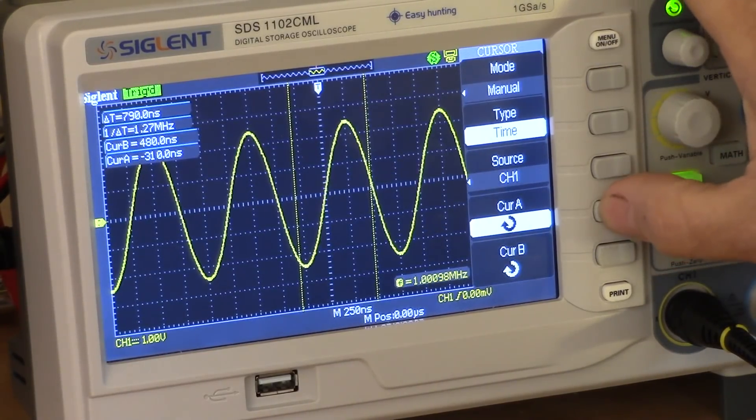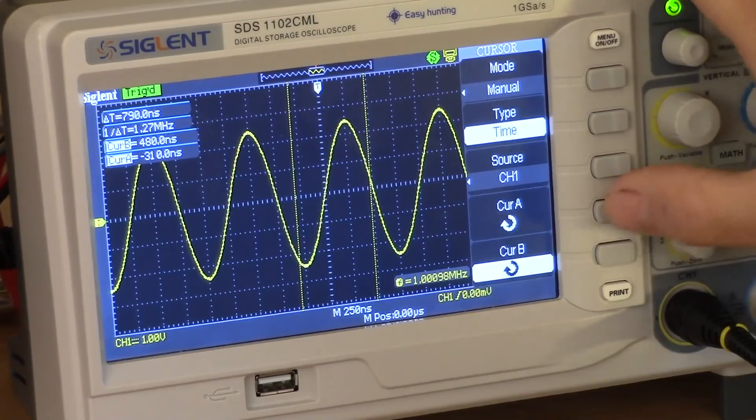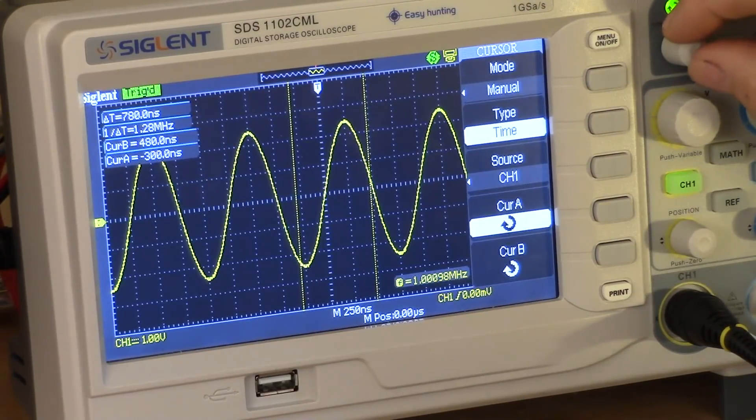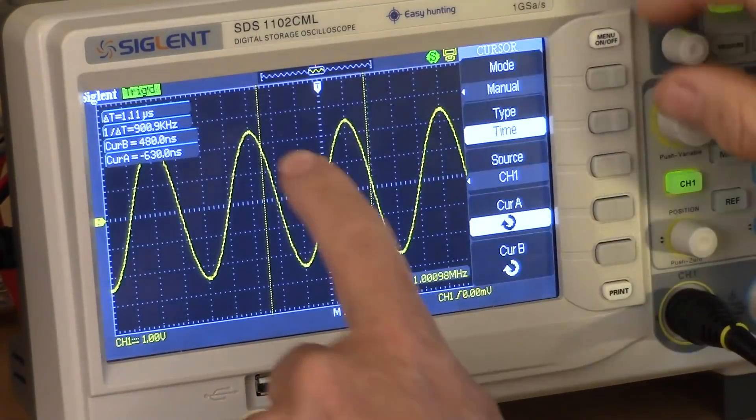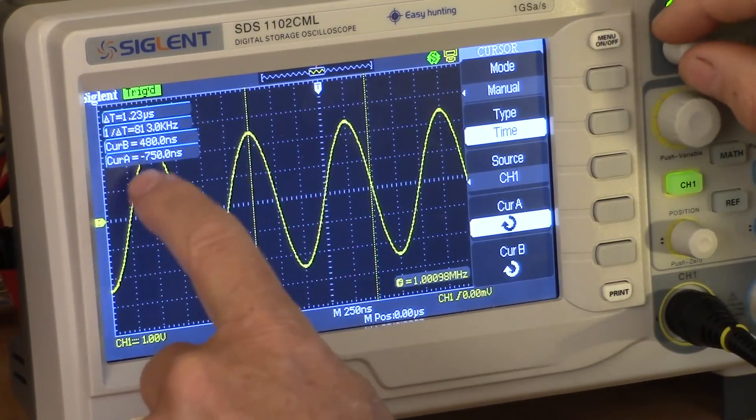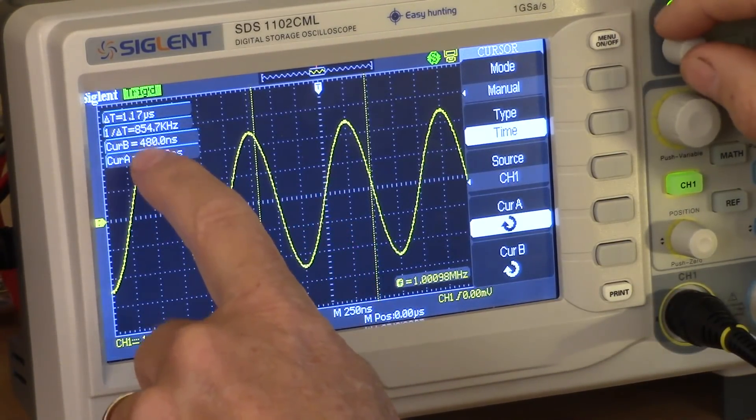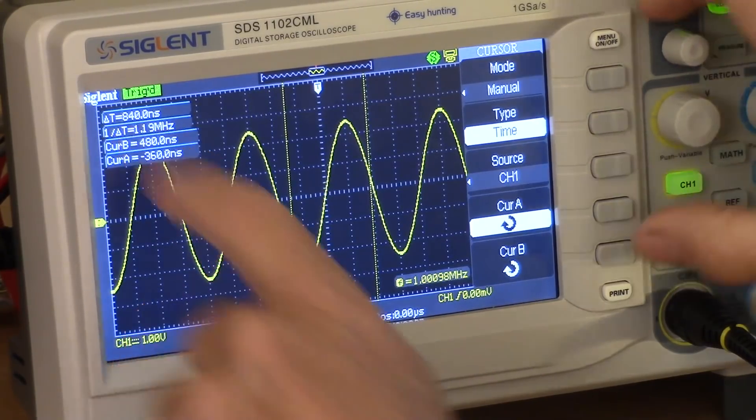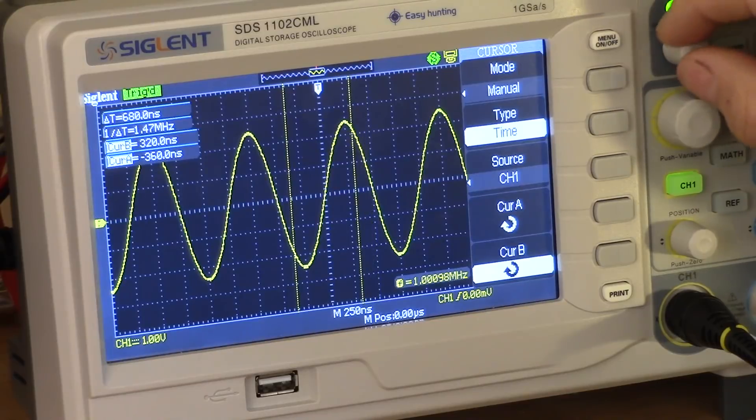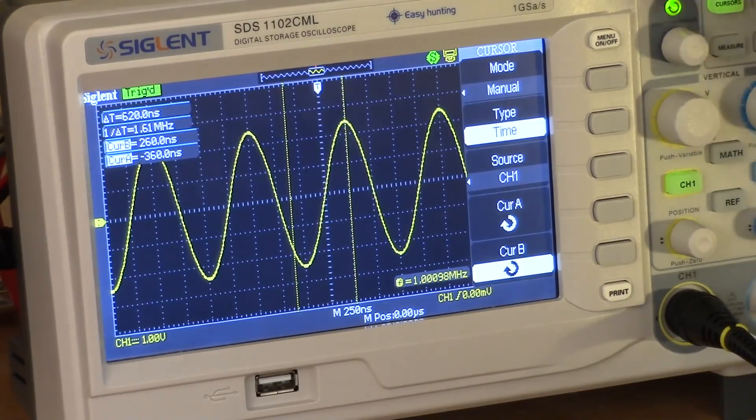Then I can select Cursor A or Cursor B. Use Cursor A. And with this little all-purpose knob, I can move Cursor A around. You can see it moving here. And over here you see the time for Cursor A and the delta time between Cursor A and Cursor B, which is nice. I can press this button and now I'm moving Cursor B. Very simple, very easy to use.